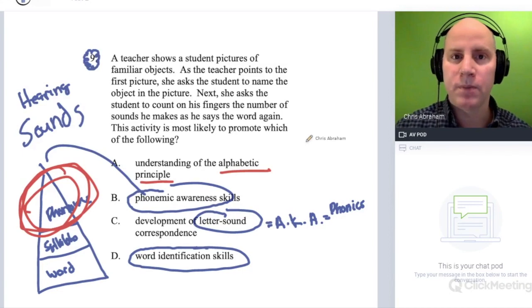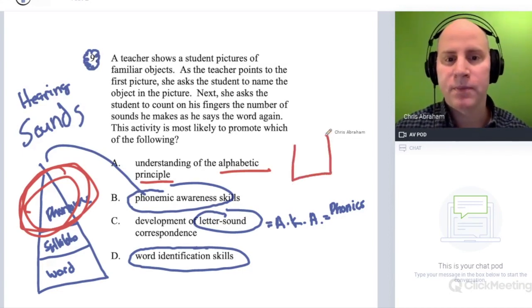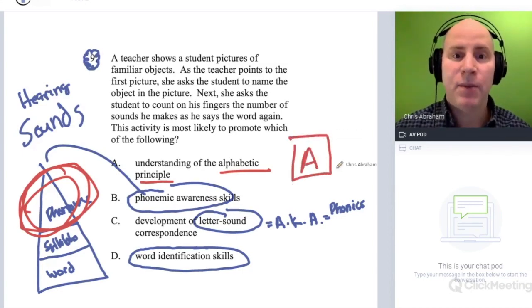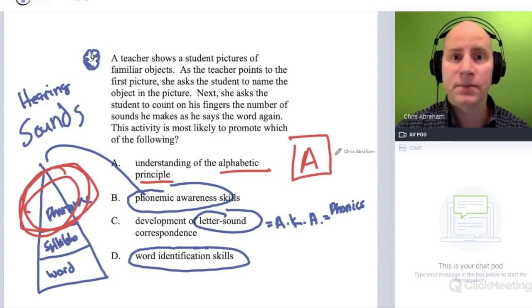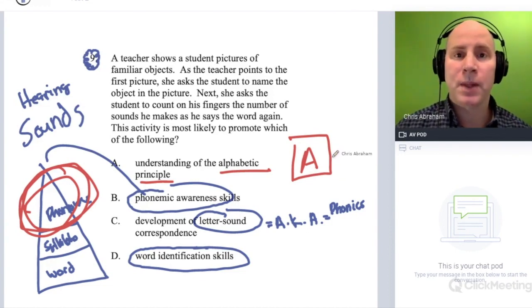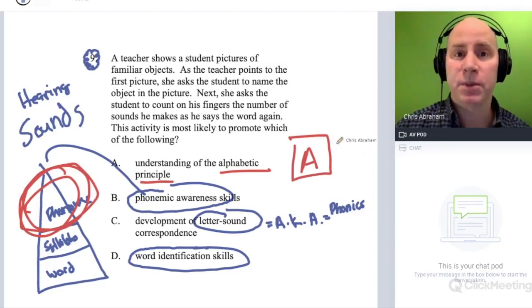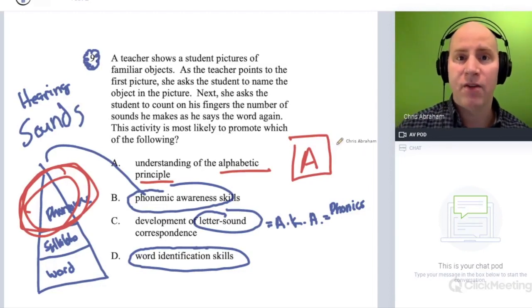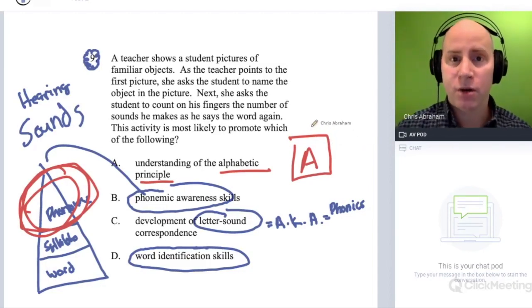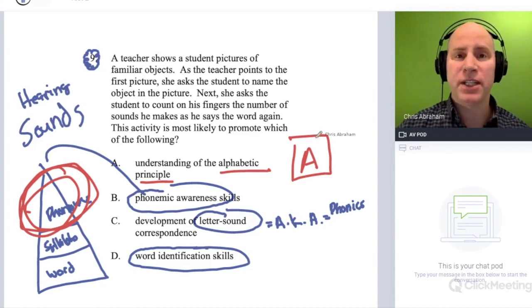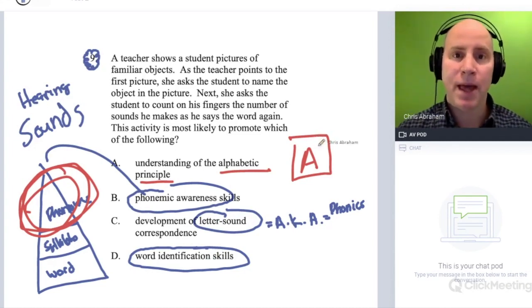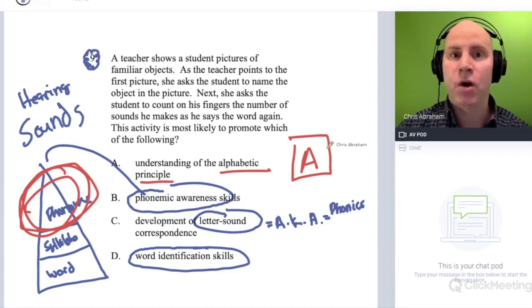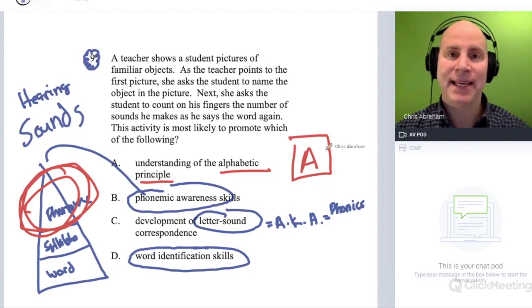The alphabetic principle has to do with print and the alphabet. We take our alphabet, our letters, and the alphabetic principle has to do with matching up the predictable sounds with the letters in the alphabet. It's taking a letter or grapheme and matching up with its predictable phonemes. For example, A can make the short sound - the A can make the short A like in 'cat' or the long A like in 'cake'.